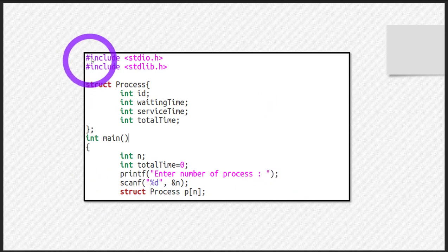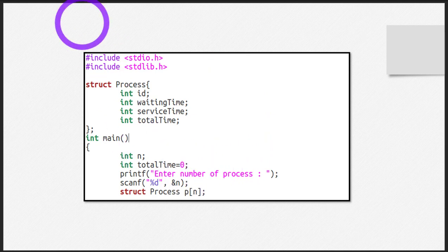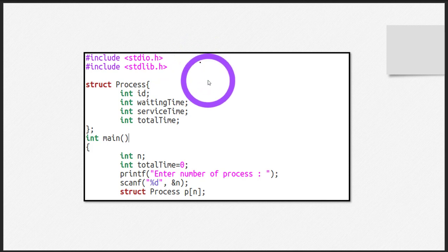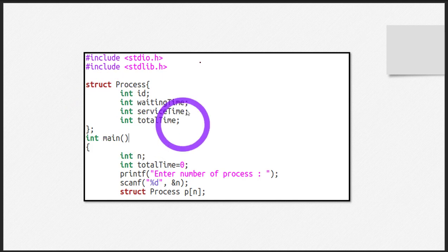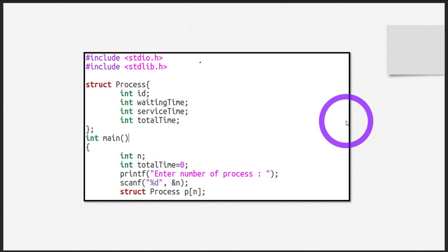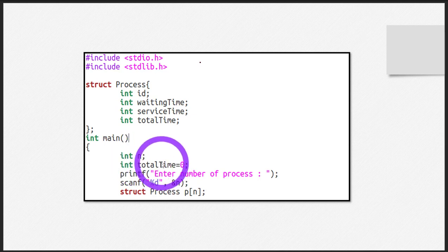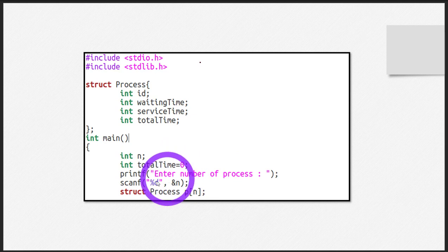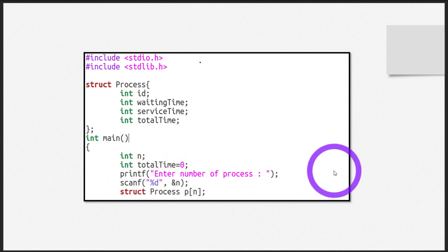In this last video of the tutorial, let's discuss the code for the solution of the tasks we just covered. I have made a structure with those four members we discussed before. I have declared a variable named total_time for my logic, and I have taken the number of processes from the user as input.